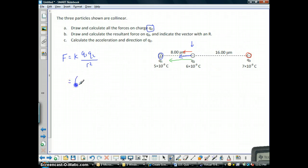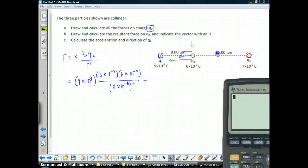K, we said, is we're going to just use the simple 9 times 10 to the 9th. Q1 and Q2 are the two charges. It's actually going to be 5 times 10 to the negative 9th, and 6 times 10 to the negative 9th. And then, the distance between them is 8 microcoulombs. So, it's not just 8, it's 8 times 10 to the negative 6th. And then, don't forget to square it, that's also part of the equation.